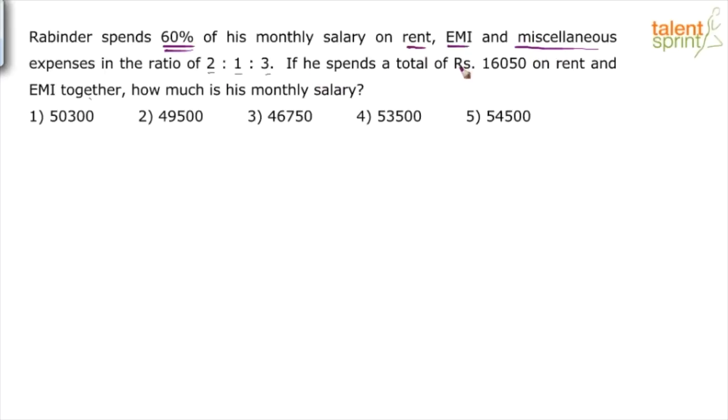Now, if he spends a total of 16,050 on rent and EMI together, how much is rent? Two parts. EMI is one part. Miscellaneous is three parts. We're looking for rent and EMI together - that's three parts out of total six parts.